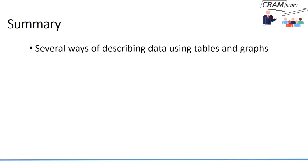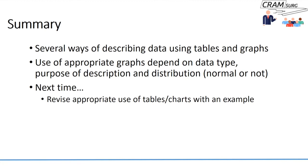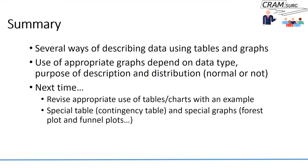In summary, there are several ways of describing data using tables and graphs. For a given dataset, you could use a number of different chart types, but appropriateness depends on the type of data, the purpose of the graph, and whether the data is normally distributed. Next time we'll revisit appropriate use of tables and charts with an example, and cover a special table called the contingency table and special graphs including forest plots and funnel plots, which should complete our lecture on descriptive statistics.